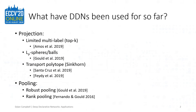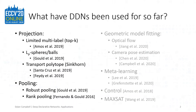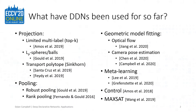The first class of applications involve projection, with applications to top-K classification with the limited multi-label projection, adversarial robustness with LP-sphere projection, and GANs with transport polytope projection. The second class includes pooling layer alternatives, with applications to robust point set classification and video classification. Another set of applications come under the category of geometric model fitting, solving problems in visual geometry such as optical flow and camera pose estimation. There are many more highly promising application domains, including a significant amount of work in meta-learning and control.